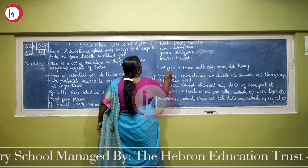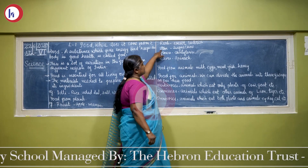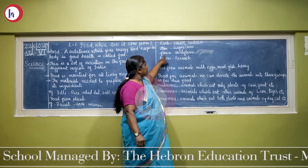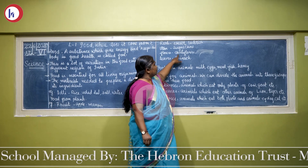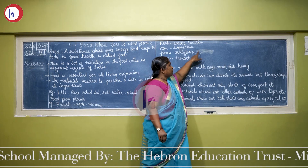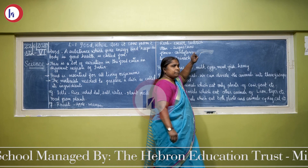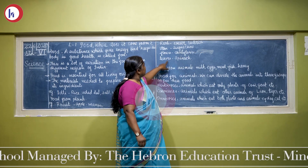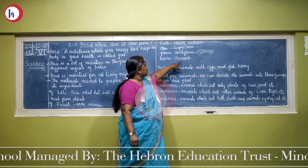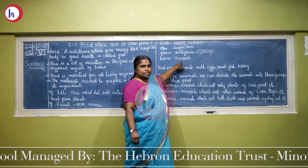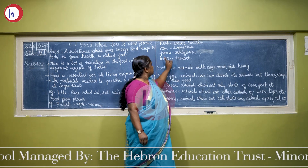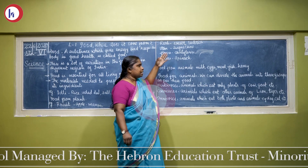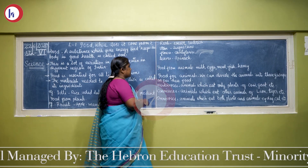Next, stem — for example, sugarcane. Flowers — cauliflower is also used as a dish, and banana flower is also used as a dish. Next, leaves: spinach is used as food, and coriander leaves, etc. are used as a dish.